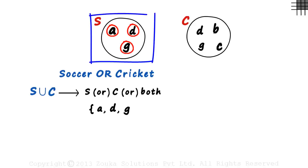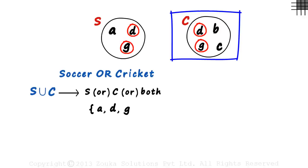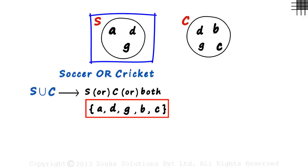A, D, and G like soccer. Looking at the cricket set, D and G already like soccer and have been included. B has to be written since it hasn't been included yet, and so does C. This is the set of people who like soccer or cricket.